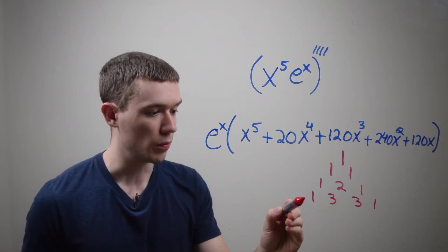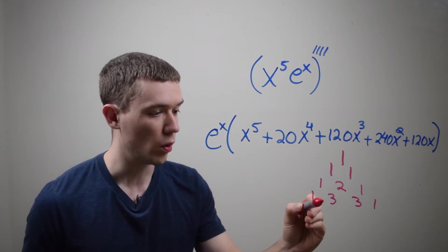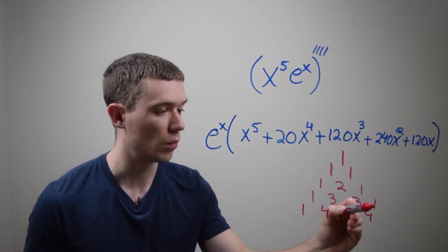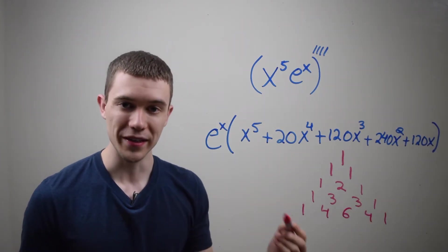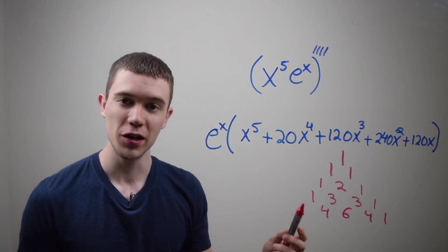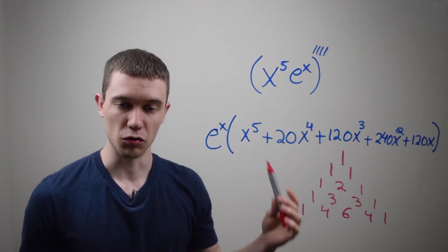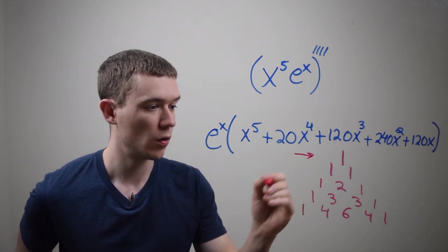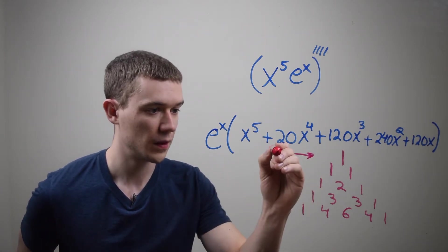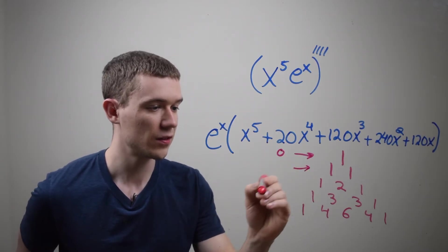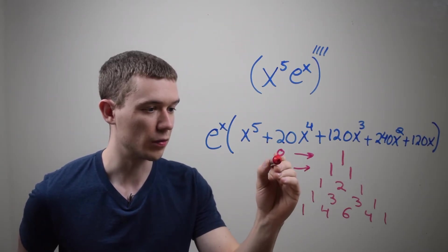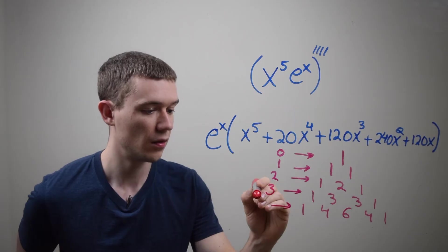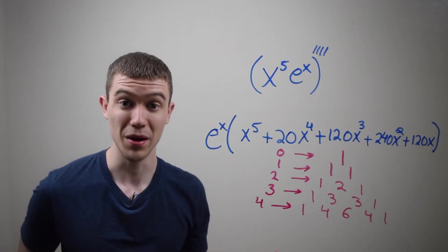One plus nothing is one. And maybe I'll even go one more. Nothing plus one is one. One plus three is four. Three plus three is six. Three plus one is four. One plus nothing is one. And you use this as coefficients for these product derivatives. So this first row would signify zero derivatives, this second row would signify one derivative, two derivatives, three derivatives, four derivatives, and so on, as many as you wanted to go.